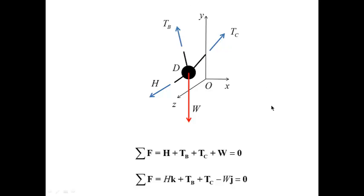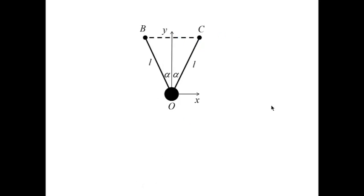To do this, I will go through a series of triangles. The first triangle is the original triangle. From this triangle, I will get the locations of the points B and C. This triangle is located in the x-y plane. The x-coordinate of B is minus L sine alpha, and the y-coordinate is L cos alpha. For the point C, the calculation is very similar, and the only difference is that the x-coordinate is now positive.